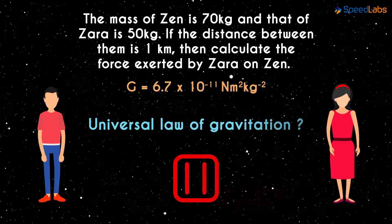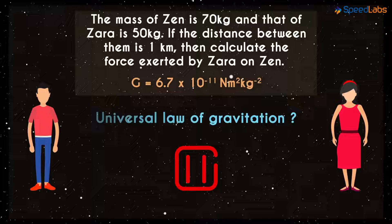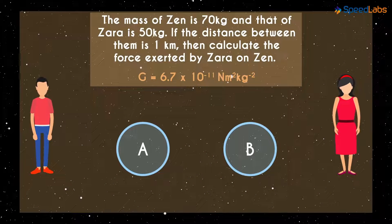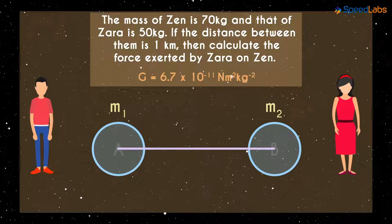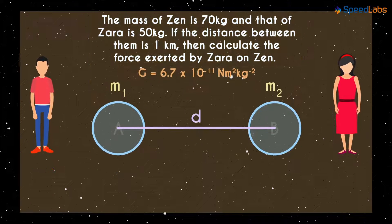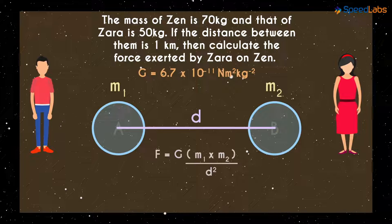Do you remember the Universal Law of Gravitation? It says that if there are two objects A and B with masses M1 and M2, separated by a distance D, then the gravitational force between them is given by this formula.